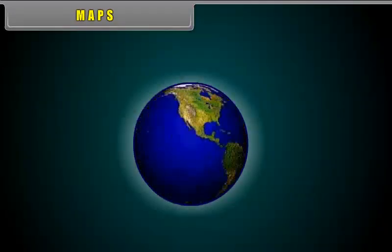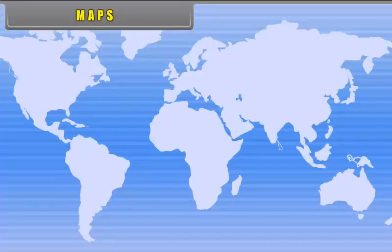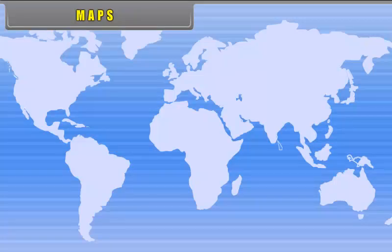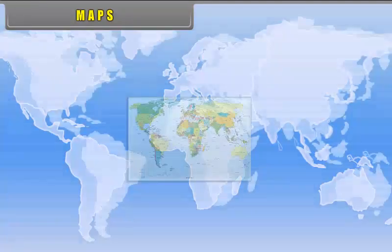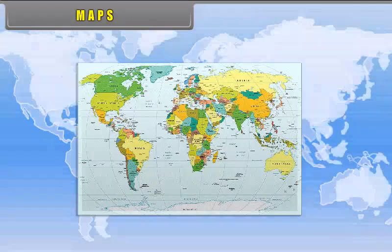Maps. The distribution of various phenomena or features on the earth are usually represented on maps which show the whole world or a part of it.